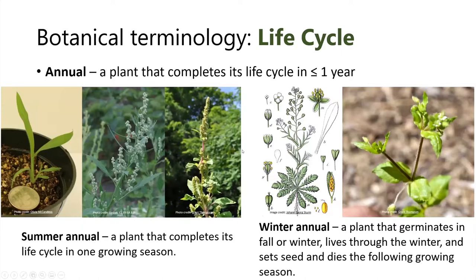Next, we'll talk about life cycle, starting with annuals. There are two main groups: summer annuals and winter annuals, but both complete their life cycle in one year or less. A summer annual completes its life cycle in one growing season. Common examples include large crabgrass, lamb's quarters, and Powell amaranth.